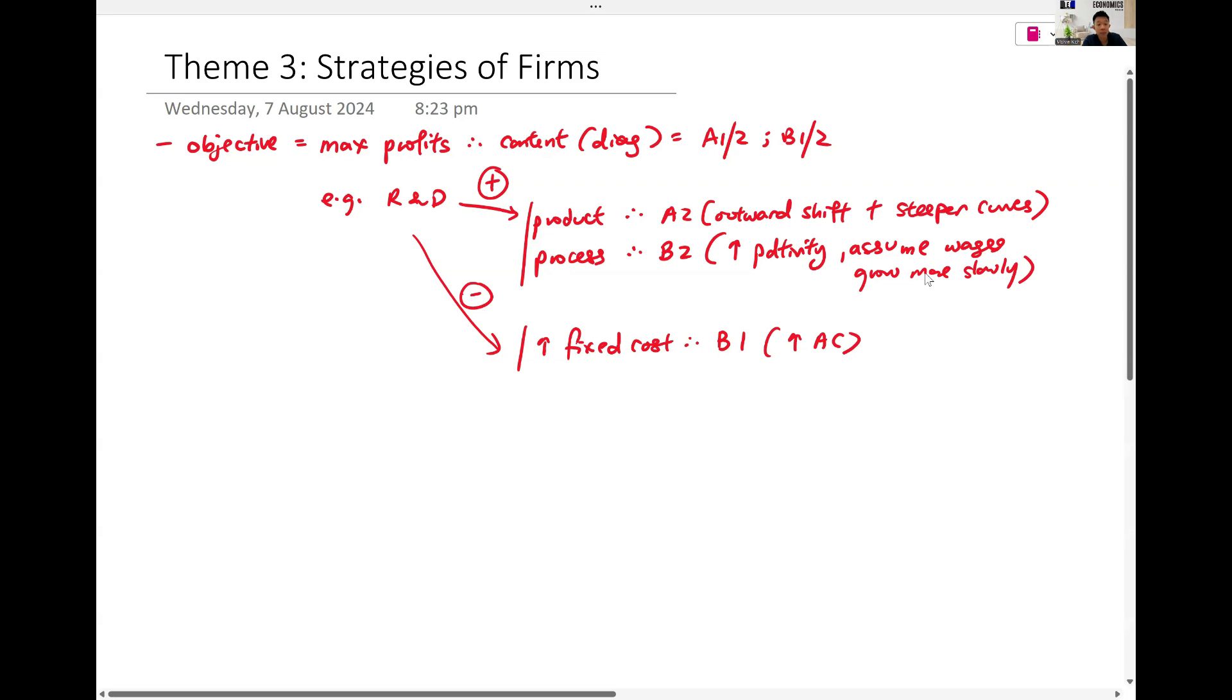Yeah, process innovation is about higher productivity. So we don't use that to explain higher revenue, but we use it to explain lower variable costs.